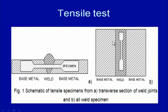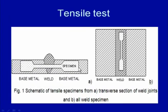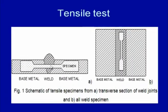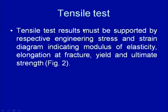Using the transverse section of the weld joint is very common because in this case we get the mechanical performance of all regions — not just the weld metal — giving the real performance of the entire weld joint as a combination of base metal, heat affected zone, and weld region. Wherever the weak zone is, the failure will occur accordingly, and that will form the basis for deciding what kind of load it can take up during service under real-life conditions.